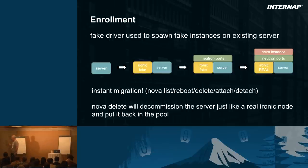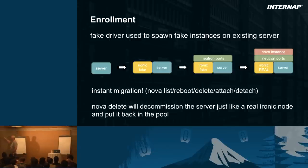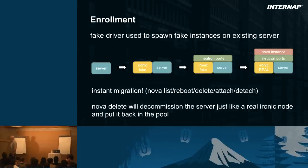To enroll existing servers, we use the fake driver of Ironic. We create the node with information from Ubersmith, but using the fake driver is very important — otherwise when you do a Nova boot, you'll wipe the customer's server. We create Neutron ports around it to imitate what's on the server with all the IP addresses. With the fake driver in place, we do a Nova boot and pinpoint it to the specific server. Then we switch back to the real Ironic driver. Now the customer can see this machine via Nova list, Nova reboot will reboot it, Nova delete will delete it, and attach/detach can work too.